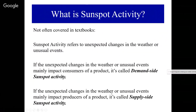If the unexpected change in the weather or the unusual event mainly impacts the producers of a product, it's called supply-side sunspot activity. For example, Hurricane Harvey shut down several major refineries which produce and sell gasoline, so the supply of gasoline shifted somewhat to the left. If it had not been for the hurricane, the supply of gasoline would have remained unchanged — that would be a form of supply-side sunspot activity.